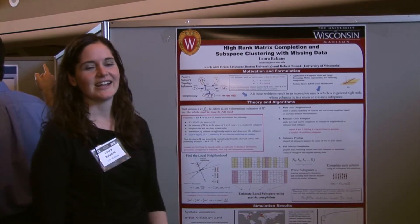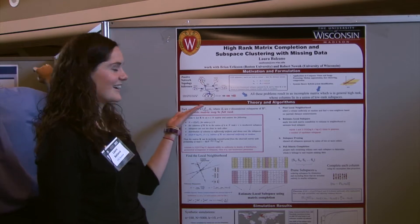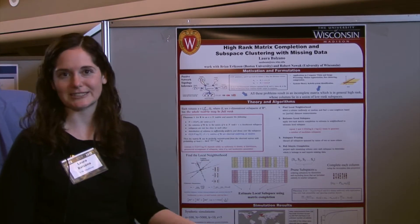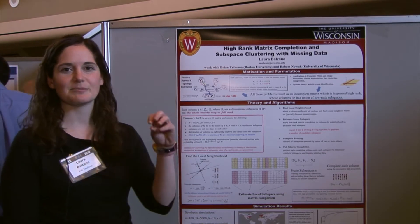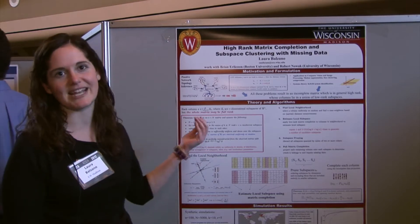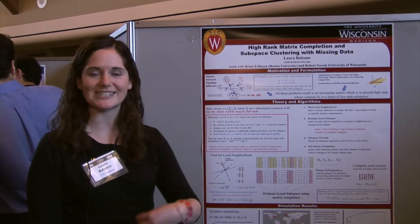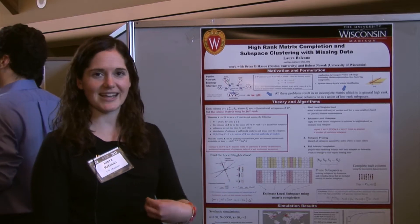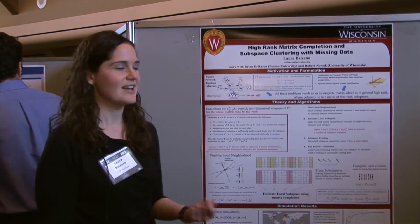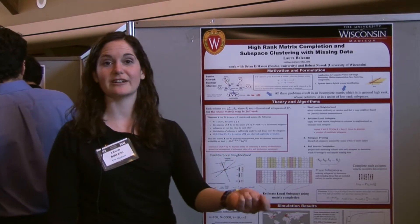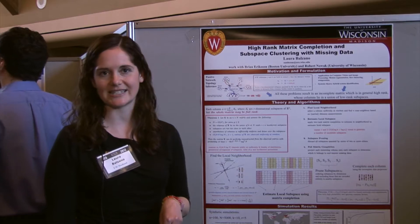The motivating application is in networks — it's inferring the topology of the internet. One way of inferring the network topology, meaning the connections between IP addresses and routers in the internet, is to place passive monitors near popular websites like CNN or YouTube. When an IP address requests a webpage from that website, that monitor can see how many hops away that IP address is from that monitor.